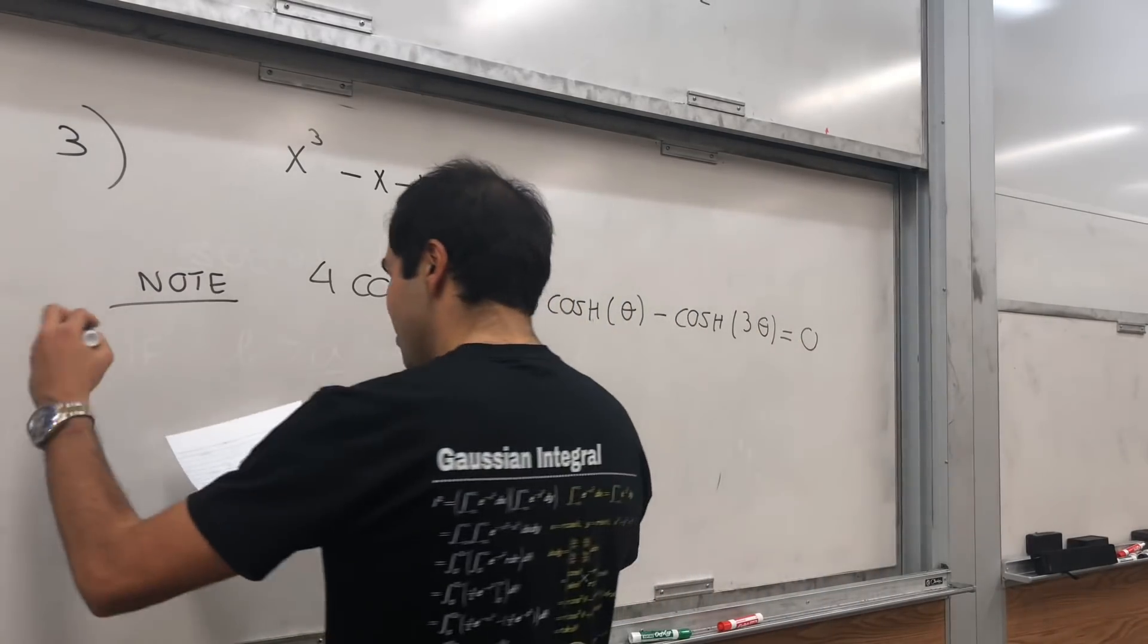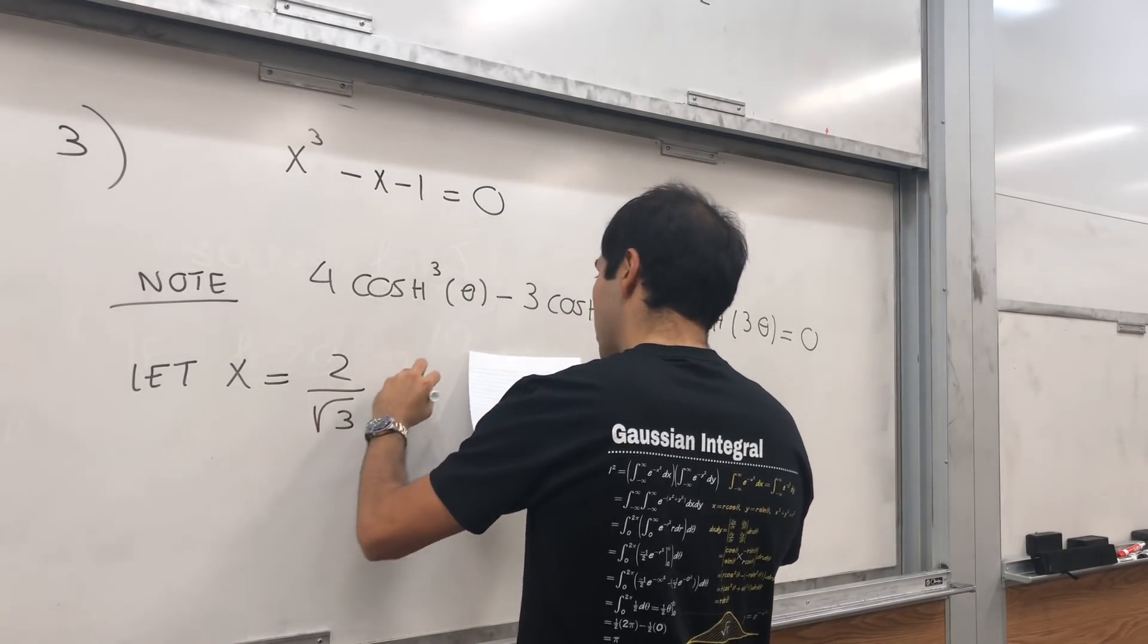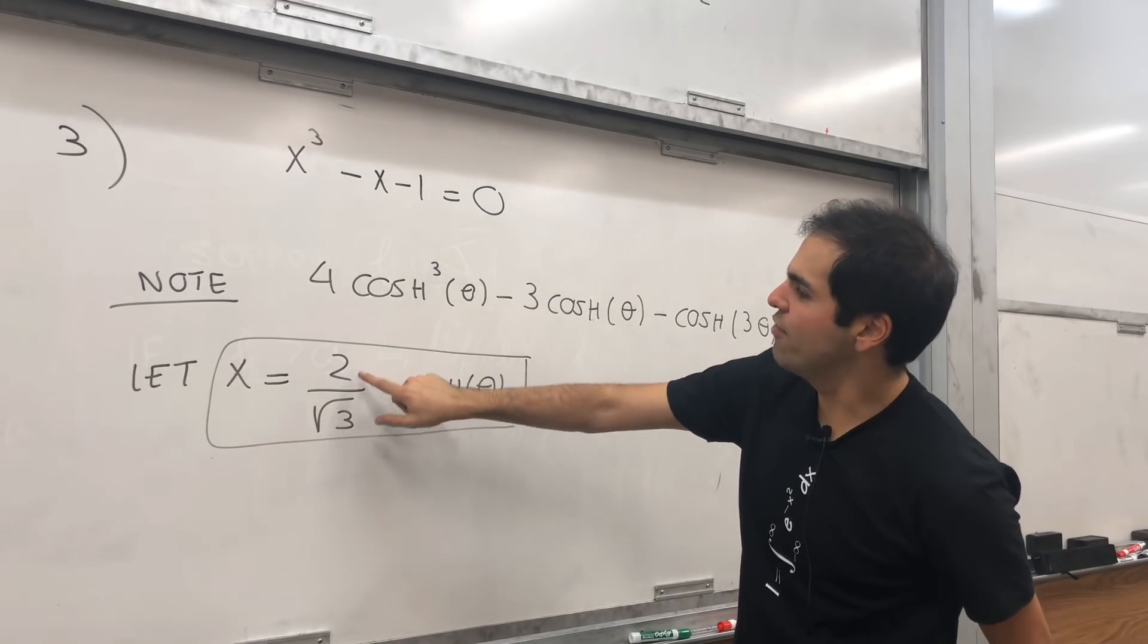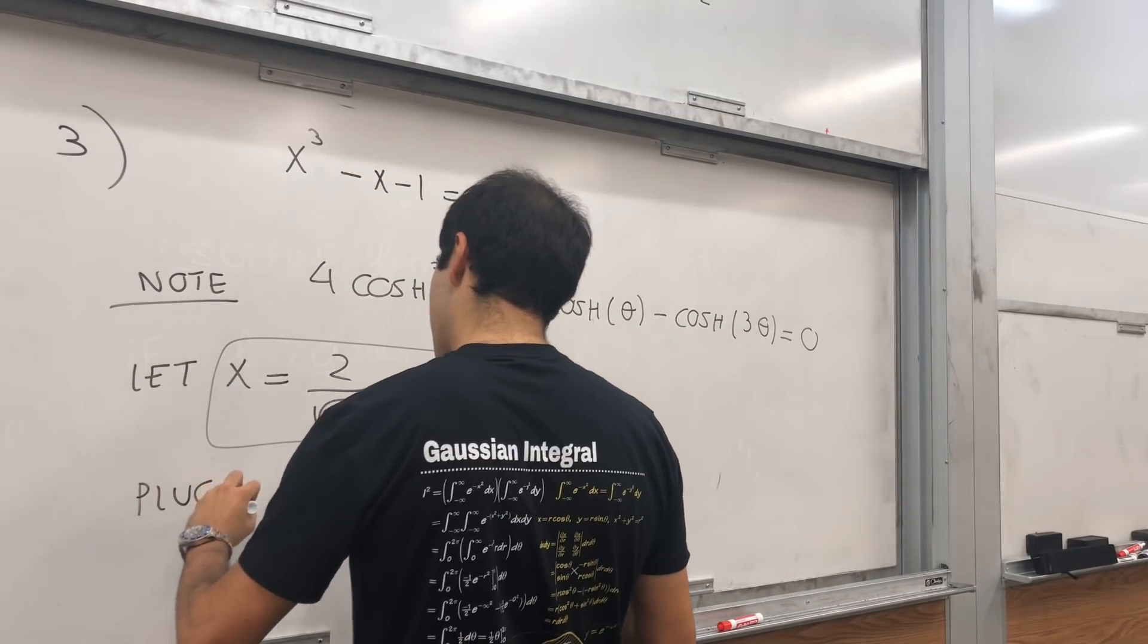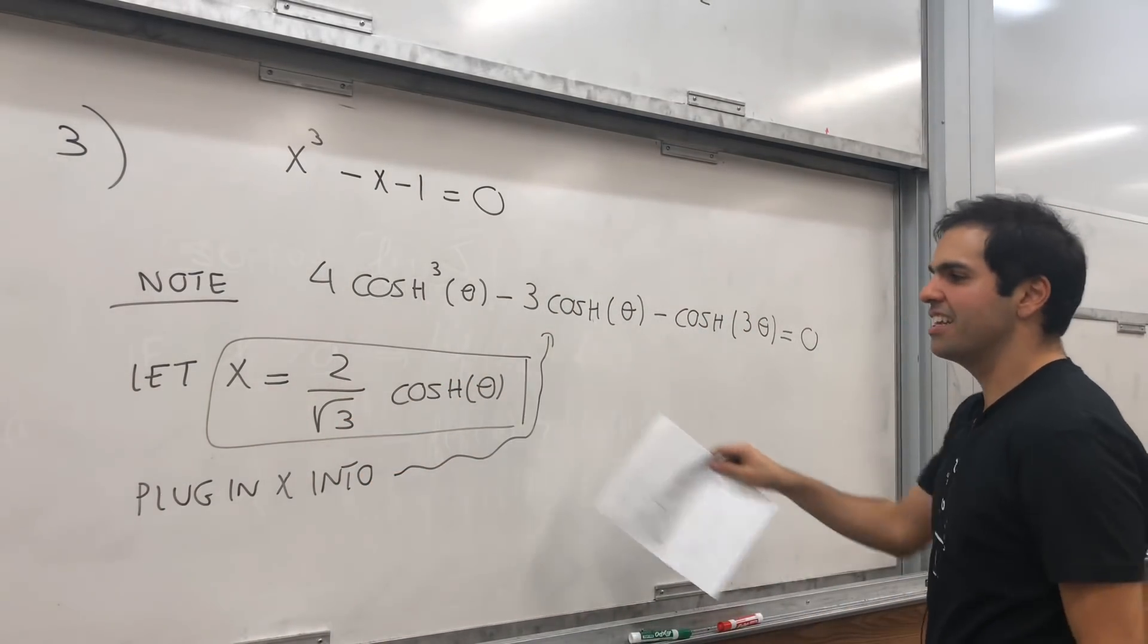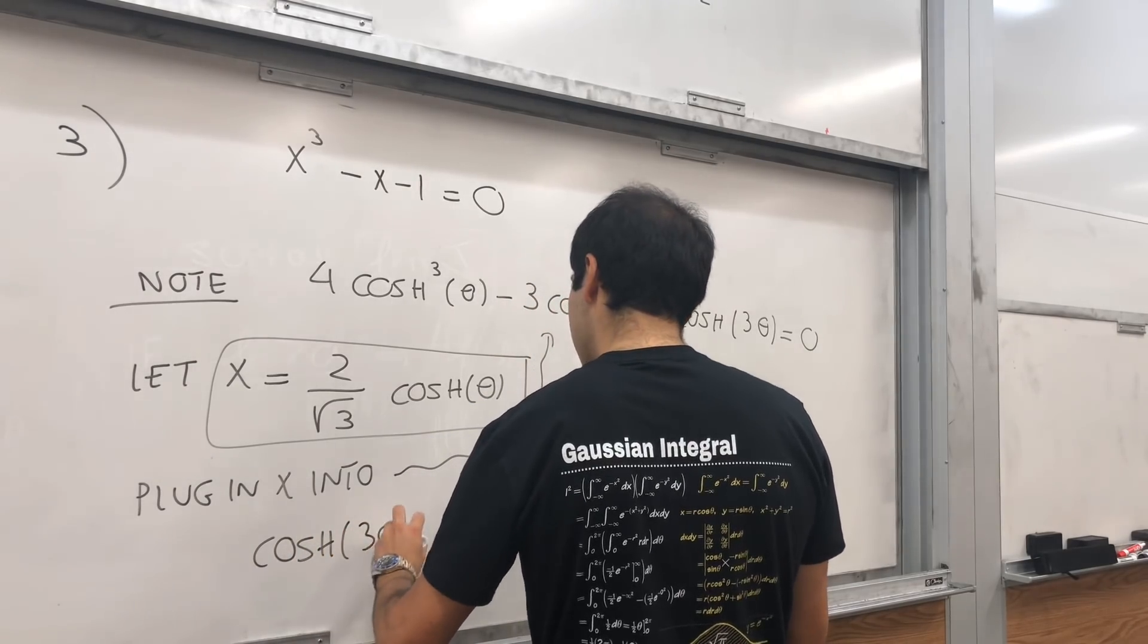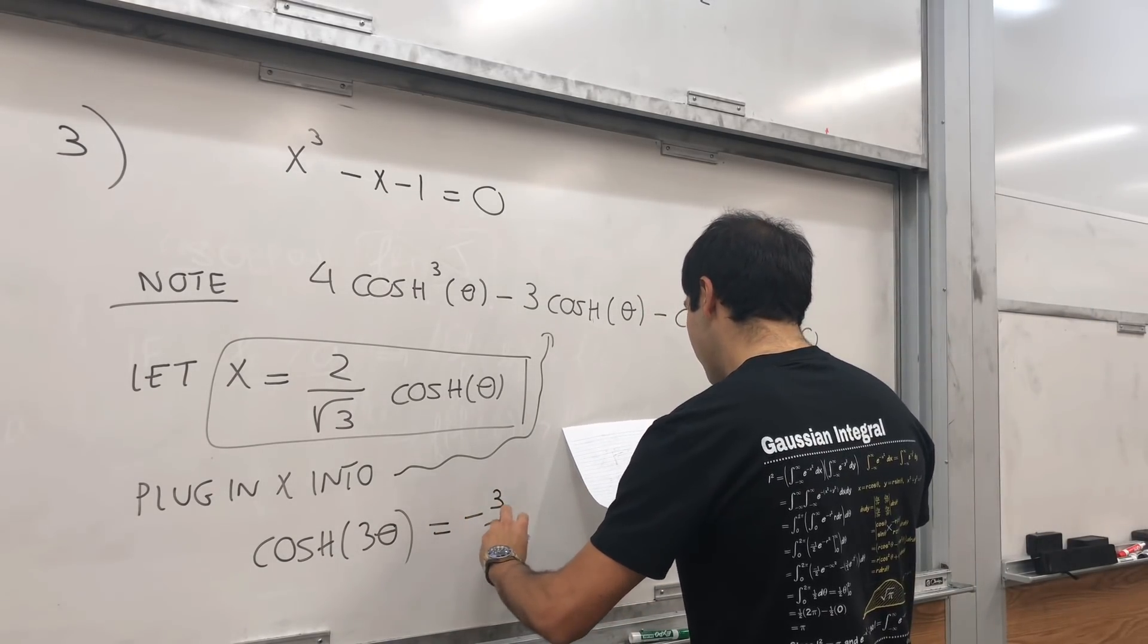Well, the trick is just let x equals 2 over square root of 3 cosh of theta. Because it turns out if you do so, cosh cubed will simplify with this thing. Then plug in x into this equation. So this is our ansatz. You plug in that ansatz into your equation and then it simplifies. In the end, I believe what you get is cosh of 3 theta. So this thing, cosh of 3 theta, it just simplifies to minus 3 halves, I guess sorry, just 3 halves square root of 3.